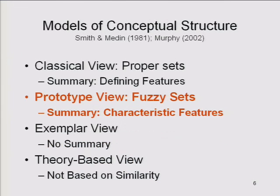Cognitive psychology and cognitive science have developed a set of models of conceptual structure. The prevailing view in social cognition favors the prototype view — that categories are fuzzy sets without sharp boundaries between categories. Rather than being summarized by a set of defining features characteristic of every single category member, we mentally represent categories in terms of characteristic features, not necessarily defining features of proper sets. There are also exemplar and theory-based views, which I'll come back to in the third lecture. But first, let's start talking about what social categories we have and what their content looks like.